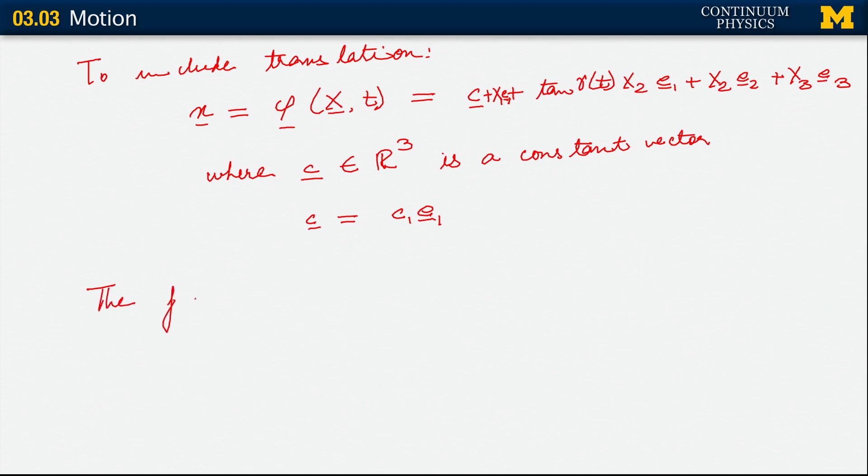So now the full description of that motion is x equals φ of X comma t equals X₁E₁ plus X₂E₂ plus X₃E₃ plus tan γₜ X₂E₂.